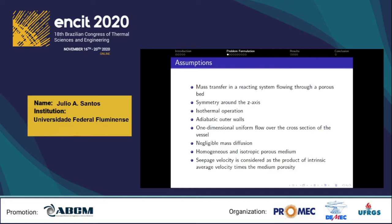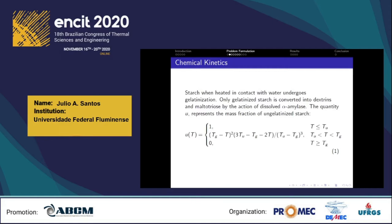Before the mathematical model, it is necessary to establish some assumptions. We consider mass transfer in a reacting system flowing through a porous medium — the porous grain bed. The control volume is a cylinder; we consider symmetry around the z-axis, isothermal operation, adiabatic other walls, one-dimensional uniform flow over the cross-section of the vessel, and in this preliminary analysis we consider negligible mass diffusion. The porous medium is assumed to be homogeneous and isotropic. Seepage velocity is taken as the product of intrinsic average velocity times the medium porosity.